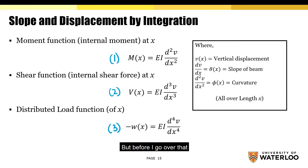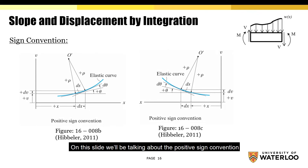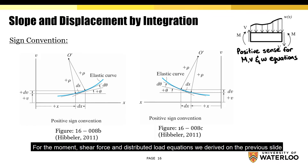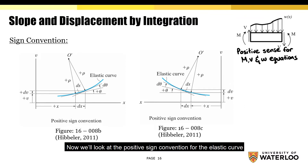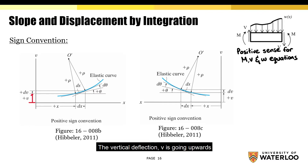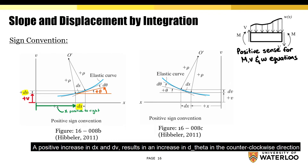Before I go over that, I'll be identifying the sign convention on the following slide. We'll be talking about the positive sign convention, starting with the diagram on the top right, which contains the positive sign convention for the moment, shear force, and distributed load equations. For a positive deflection, the vertical deflection v is going upwards, and the slope theta is measured counterclockwise from the x-axis when x is positive in the right direction. This is because a positive increase in dx and dv results in an increase in d theta in the counterclockwise direction.